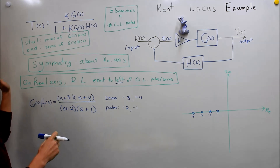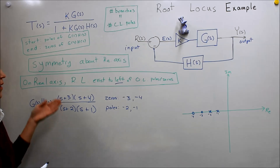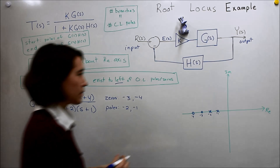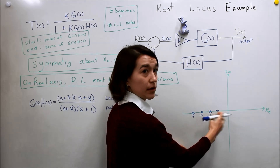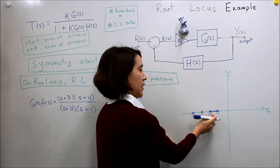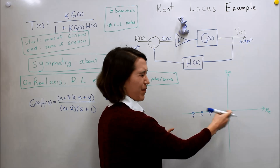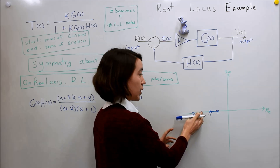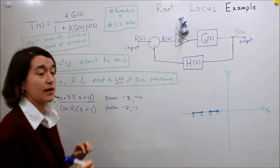From the real axis rule, we can now draw the parts of the root locus that exist on the real axis. We have our negative one here as our first pole. To the left of that it's an odd number, so we know the root locus exists there. To the right of that point there are two poles/zeros to the right, so there's no root locus there. But when we hit the next point, there are three to the right of it, so we can draw the root locus there as well.